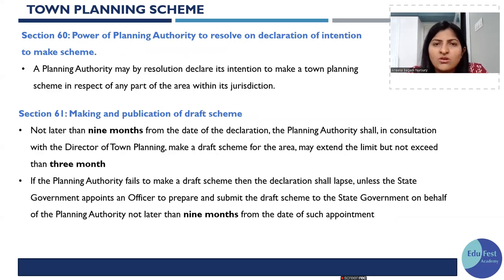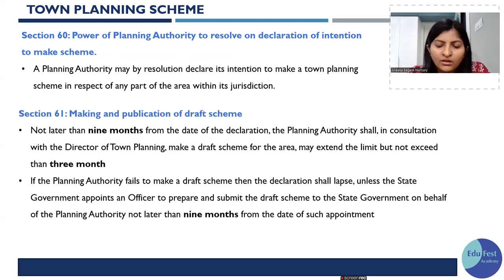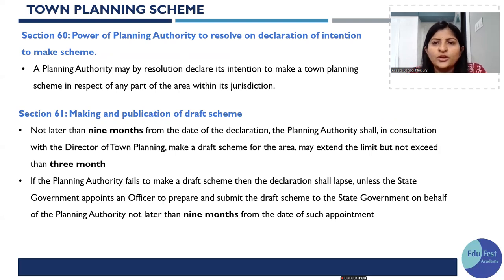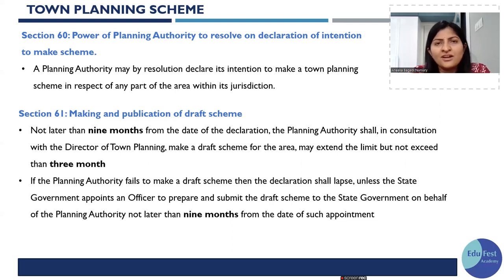The planning authority has the power to resolve on a declaration of intention to make a TP scheme when it feels a TPS is needed for DP implementation. Within 9 months of that declaration, the draft TP scheme must be prepared. If the planning authority fails within that time, they can ask for a 3-month extension. If they still fail, the state government appoints an officer, who then has 9 months from his appointment to prepare the draft TPS.